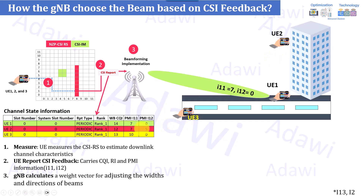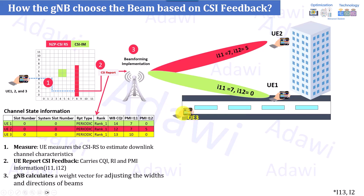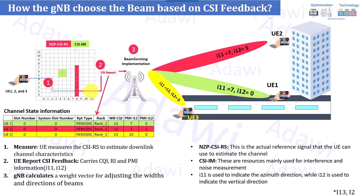User two has i12=5 because it's at a higher vertical position in the building. The gNB dynamically changes the beam based on this feedback. For user three, which is in a different horizontal direction, the report uses a different i11 value but i12 remains zero since it's still on the ground. To summarize, codebook type 1 identifies the best pre-coding matrices applied by the gNB to maximize the SNR.